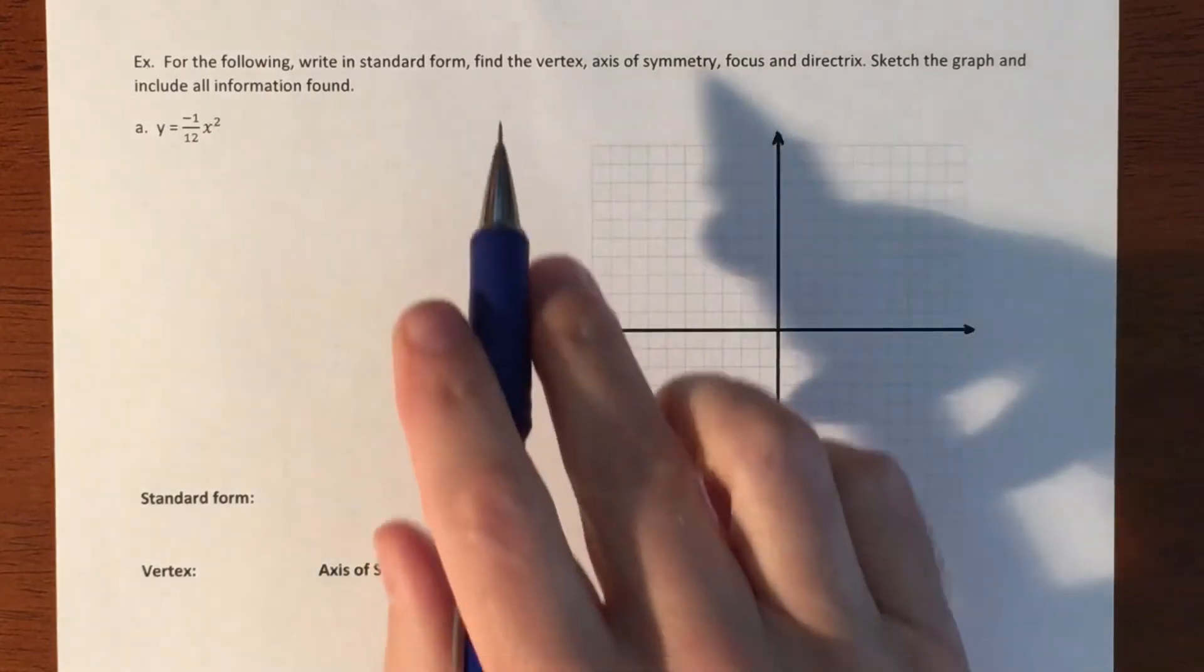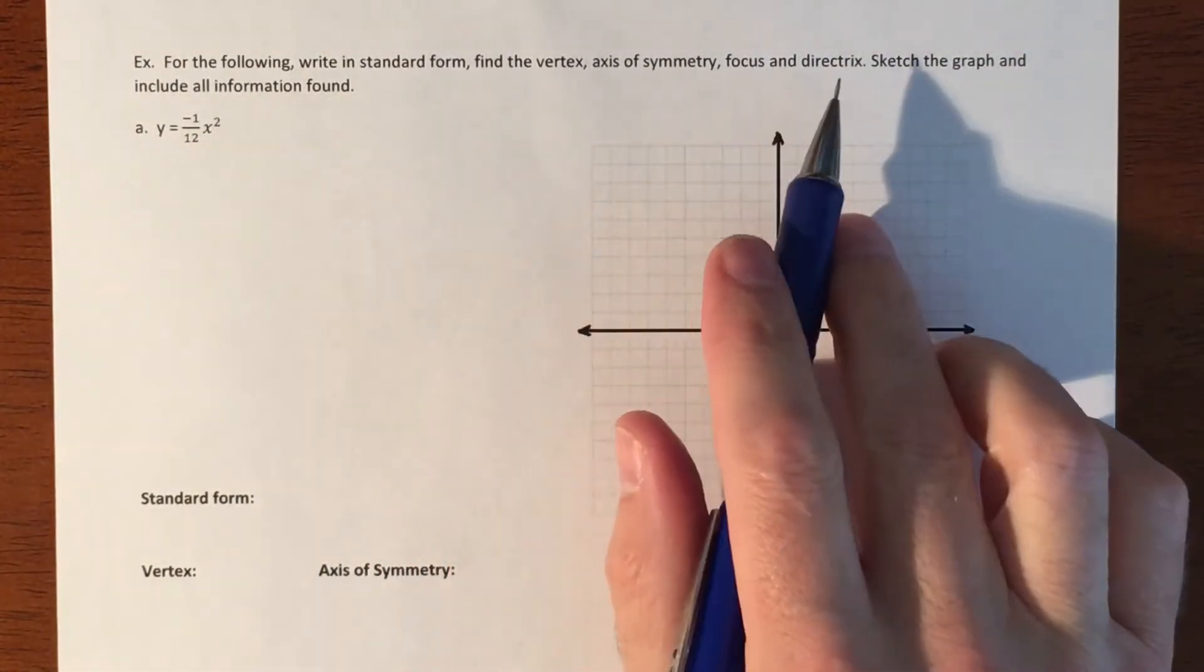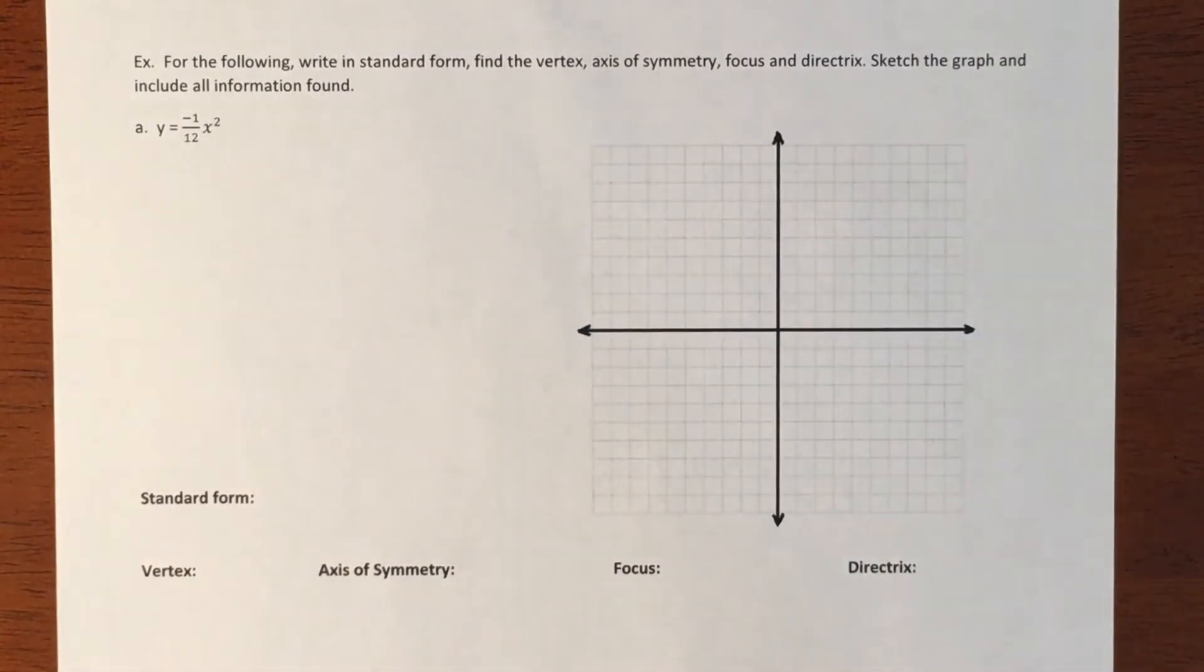We're going to answer, we're going to figure out where the vertex is, we're going to figure out the axis of symmetry, focal point, and the directrix. So we're going to sketch it and answer all these questions.